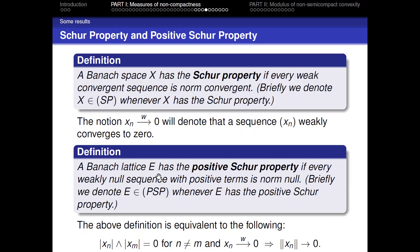There is another definition. A Banach space has the Schur property if every weakly convergent sequence is norm convergent, denoted X ∈ SP. A Banach lattice has the positive Schur property if every weakly null sequence with positive terms is norm convergent, denoted E ∈ PSP.